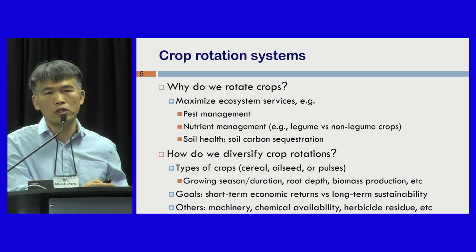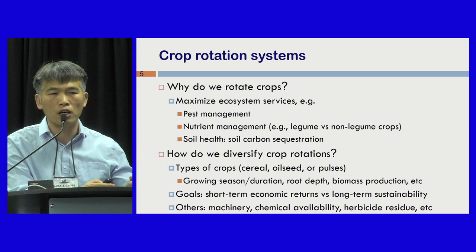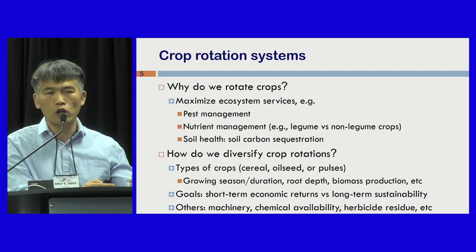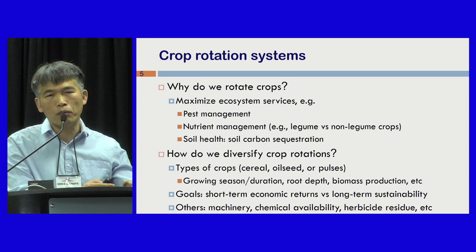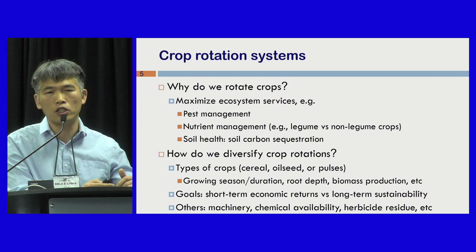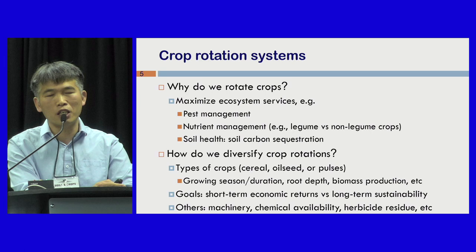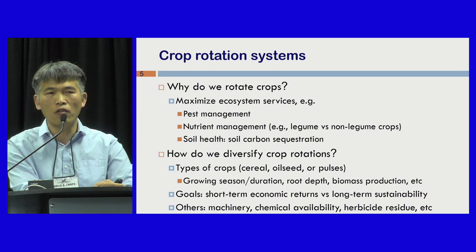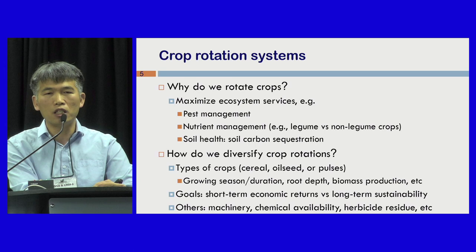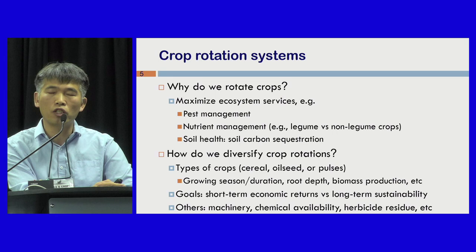For producers, it is very important to adopt a well-planned crop rotation because crop rotation is effective for managing weeds, disease, and improving soil health. A diversified crop rotation means you'll probably have a better outcome. Diversifying crop rotation is not just selecting different crops — you also need to consider phenotypical differences such as root depth and biomass production. Producers also need to set a clear goal for their rotation, whether it's for weed control, economic returns, or long-term sustainability. Additional considerations include machinery investment, availability of registered chemicals, and residual effects.